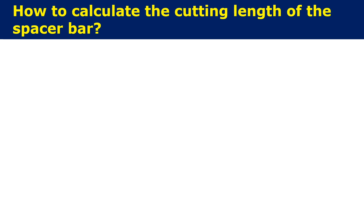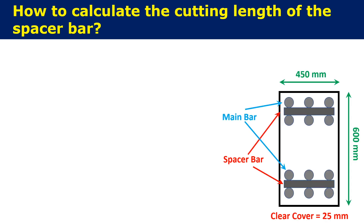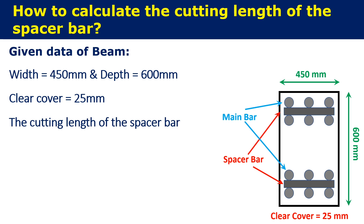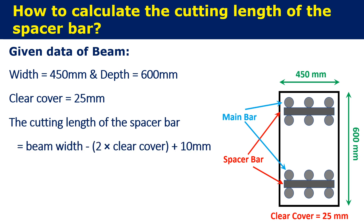How to calculate the cutting length of the spacer bar? Let us calculate the cutting length of the spacer bar for the below given section. The given data for the beam: beam width is equal to 450 mm, beam depth is equal to 600 mm, and clear cover is 25 mm. Hence, the cutting length of the spacer bar is equal to beam width minus two times clear cover (cover on the left and the right face of the beam) plus 10 mm to rest the bars adequately, which is equal to 450 mm minus (2 × 25 mm) plus 10 mm. This gives us 410 mm.